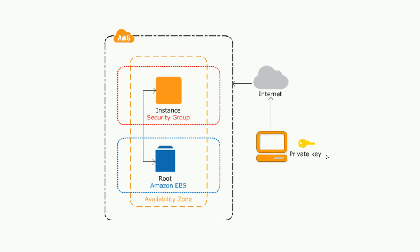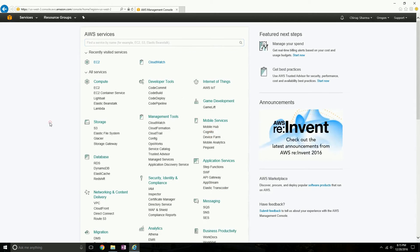By the end of this tutorial, you'll have that physical private key file with you, which you'll use to log in to your Linux instance. There's no password — it's an encryption-based key pair. There's a public key that exists with Amazon when the instance is created, and you're given a private key. The only way you can log in is using that private key, since you've associated it with the instance you're creating.